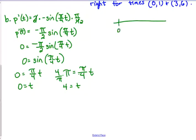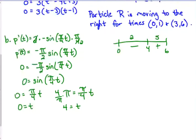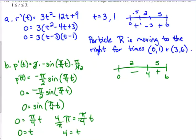So 0, 4, 6. So we just need to check, like, 2 and 5. When we plug in 2 into this function, we're going to get pi over 2. Sine of pi over 2 is positive 1, so that's going to be a negative value. We're going to plug in 5. 5 pi over 4 is in the third quadrant. Sine is negative. So we multiply by negative pi over 2, so that gives us a positive. So from 0 to 4, it's moving to the left. From 4 to 6, it's moving to the right.